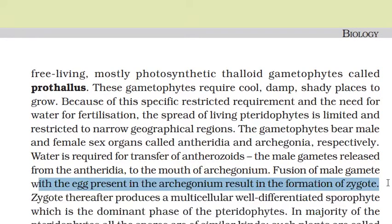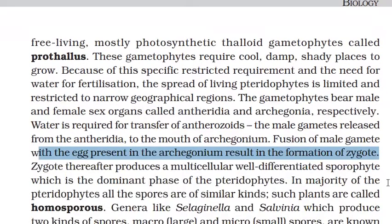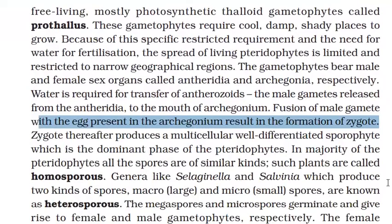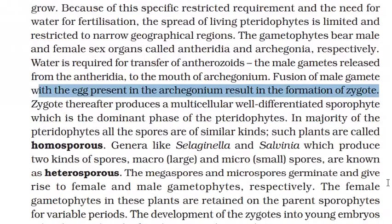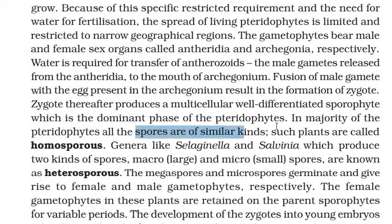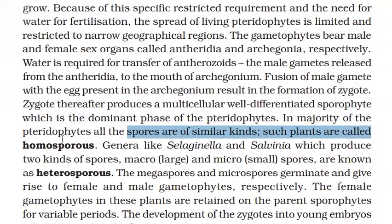There is fusion of male gametes with the egg present in the archegonium and formation of a zygote. The zygote produces a multicellular, well-differentiated sporophyte. The sporophyte is the dominant phase, and in most pteridophytes all spores are of similar kinds.